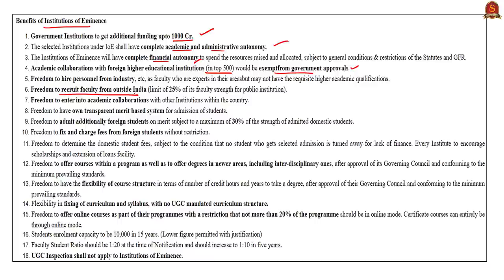These institutions can admit foreign students on merit and have the freedom to offer online courses with certain restrictions. They have freedom to have their own merit-based system for admission and can charge fees from foreign students without restrictions. All these institutes enjoy flexibility in fixing the curriculum and syllabus with no UGC-mandated curriculum structure. There is also flexibility in framing course structure in terms of credit hours and years to take a degree. Most importantly, UGC inspection shall not apply to these Institutions of Eminence.